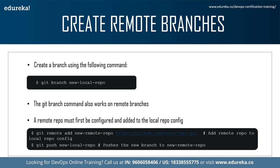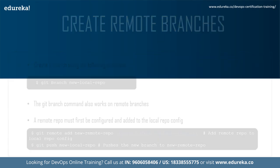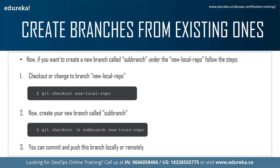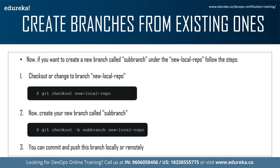Creating local and remote branches is a relatively easy concept and you'll be using it often throughout your git and GitHub journey. Now let's understand how to create sub-branches — that is, creating branches from existing ones. If you want to create a new branch from any existing branch in git, you must check out into the branch from which you want to create the new branch.